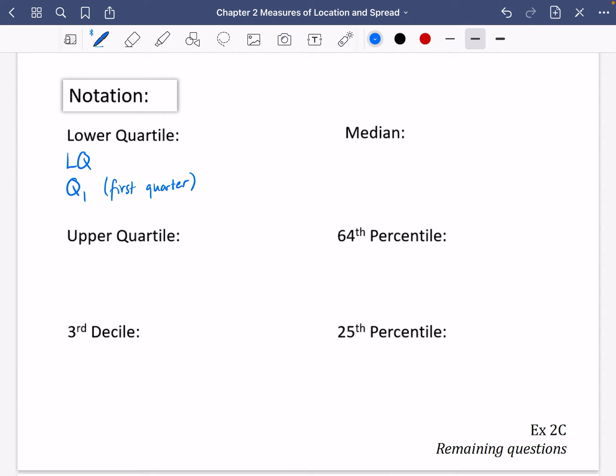The median we sometimes use the letter M, but not really preferable to write that because it can get confused with the mean and the mode and other things. So the preferable one is to use Q₂, which means it's the second quarter of the way along or the second quartile really, because two quarters is a half.